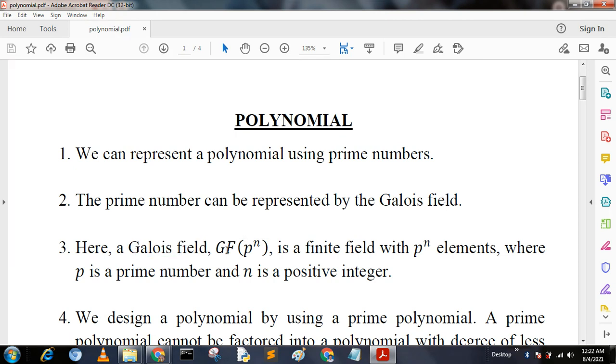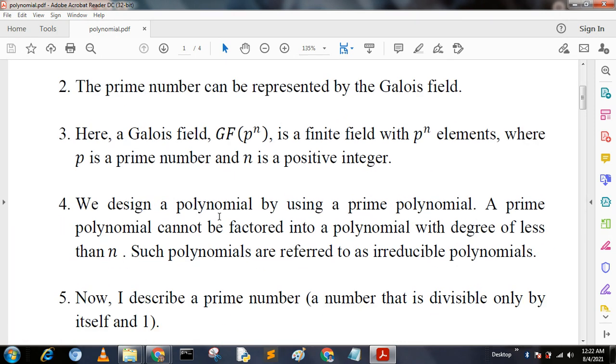Here the Galois field, GF(p^n), is a finite field with p^n elements, where p is a prime number and n is a positive integer. Now we design a polynomial from a prime polynomial.